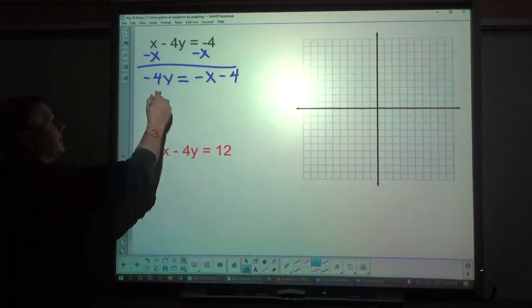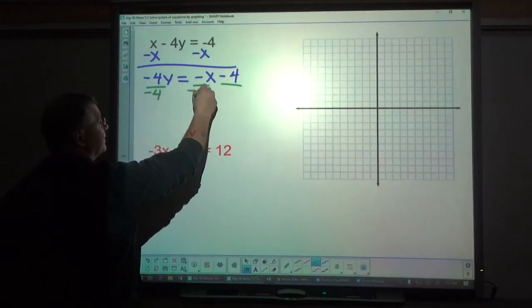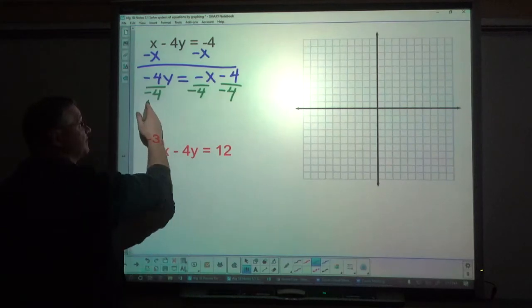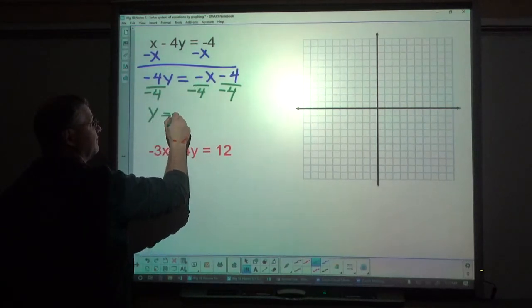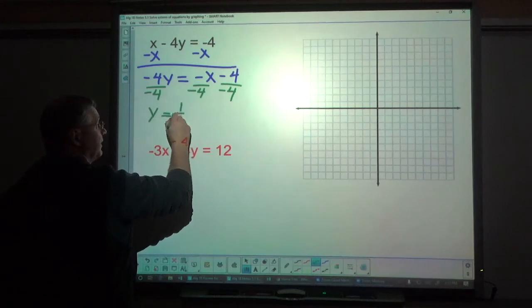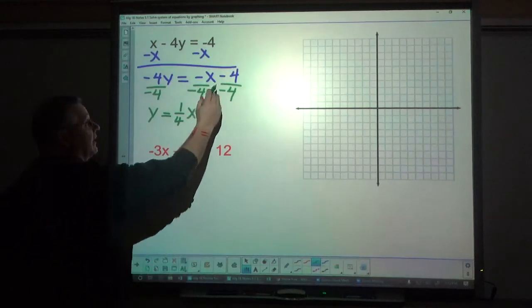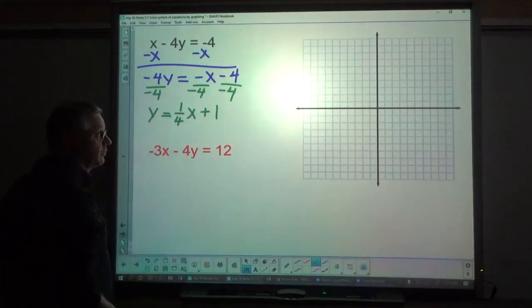Alright, so I'm going to subtract the x variable from both sides, or add the opposite of the x variable to both sides. Negative 4y equals negative x. Notice I put that before the number minus 4, and I put it before the number so that I can have it in my y equals mx plus b form when I'm done. Now I'm going to divide everything on both sides by the coefficient of the y term, in this case negative 4. Negative 1 divided by negative 4 is a positive one-fourth x. Notice I put the x to the side. And negative 4 divided by negative 4 is positive 1. So there's my first equation.